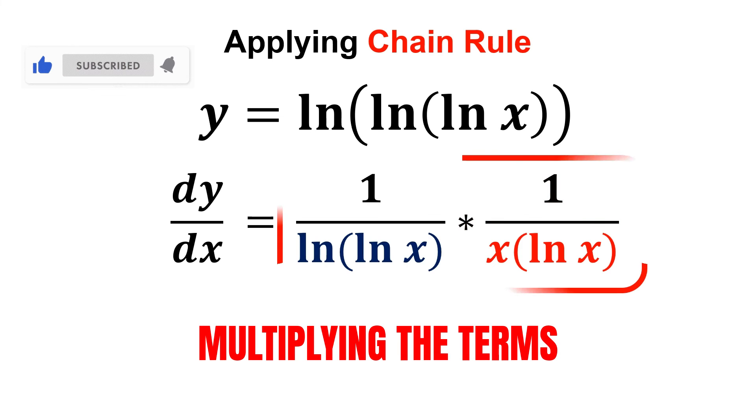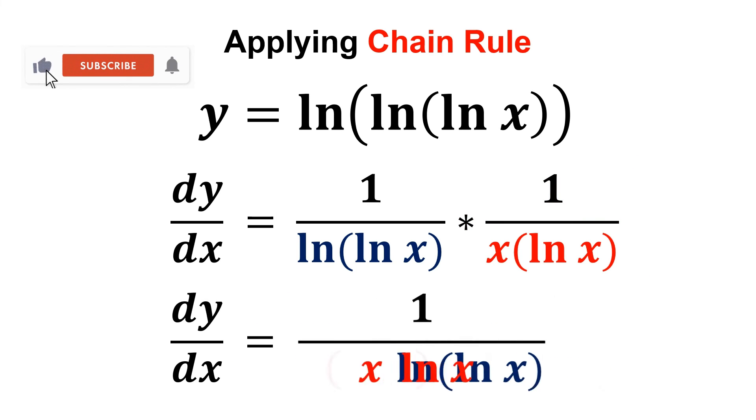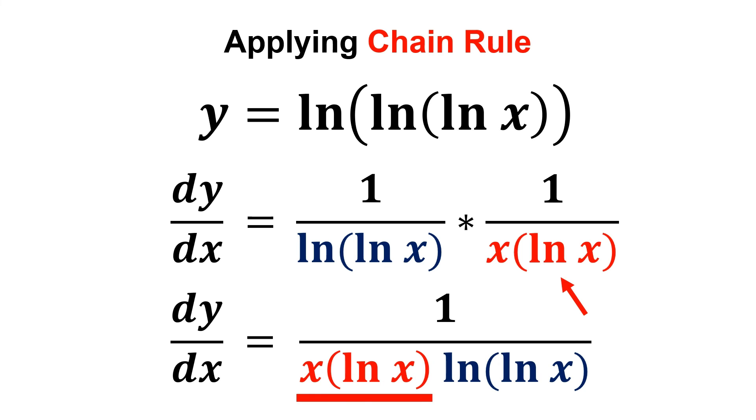All we have to do now is to multiply these two terms. By multiplying it, in the denominator, we end up with x multiplied by ln x multiplied by ln of ln x.